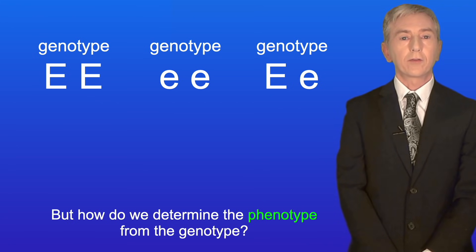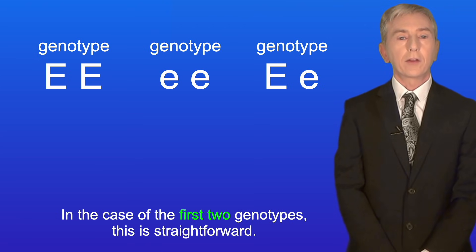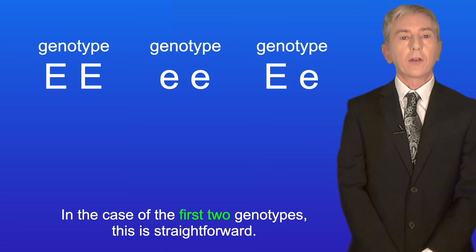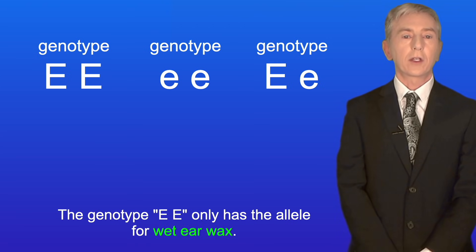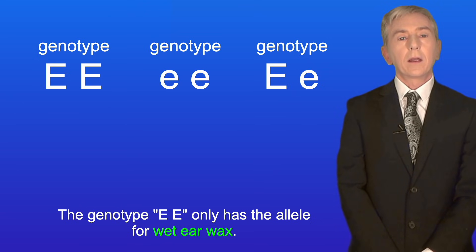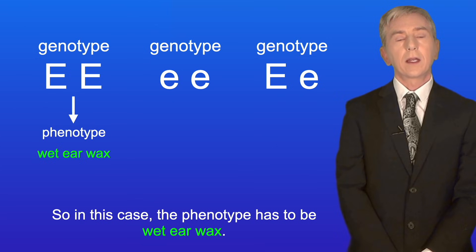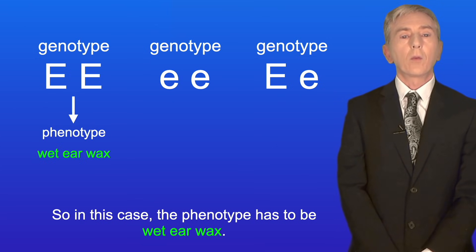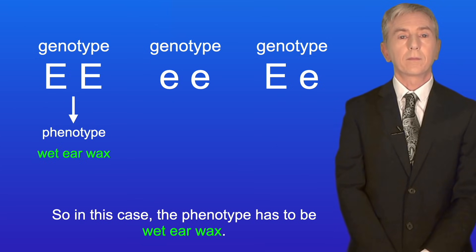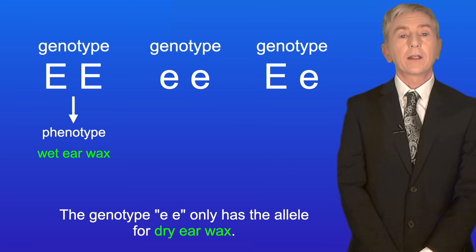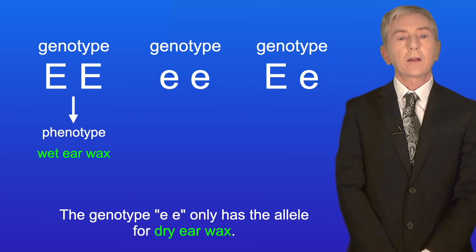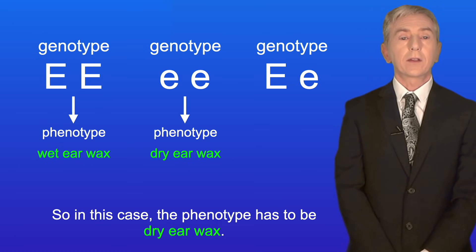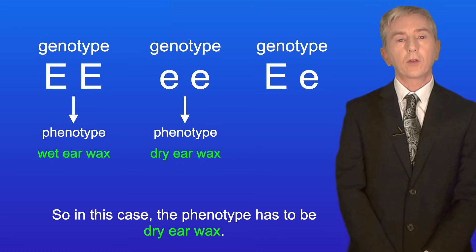How do we determine the phenotype from the genotype? For the first two genotypes this is straightforward. The genotype EE only has the allele for wet earwax, so the phenotype has to be wet earwax. The genotype ee only has the allele for dry earwax, so the phenotype has to be dry earwax.